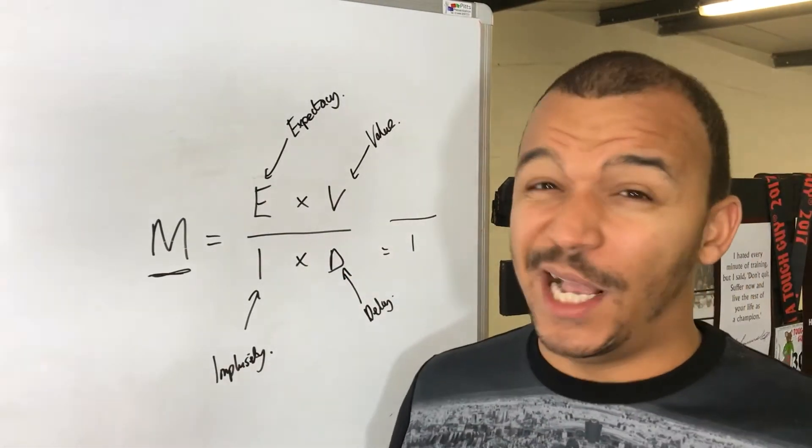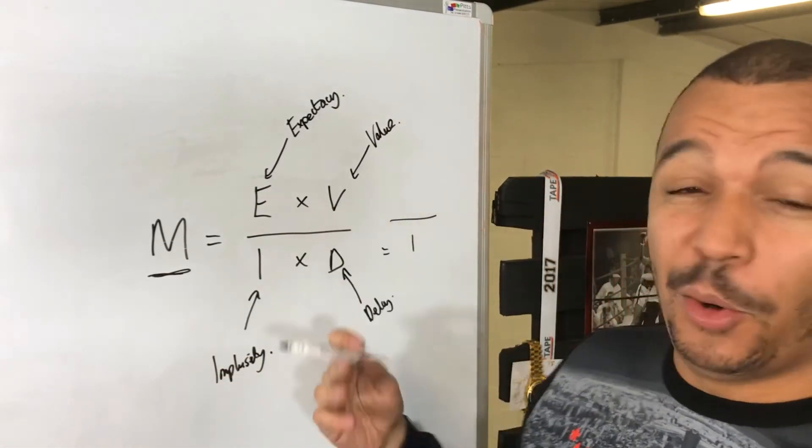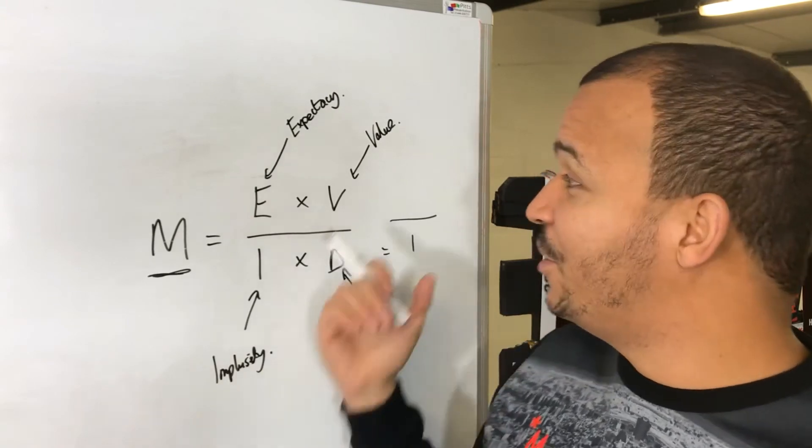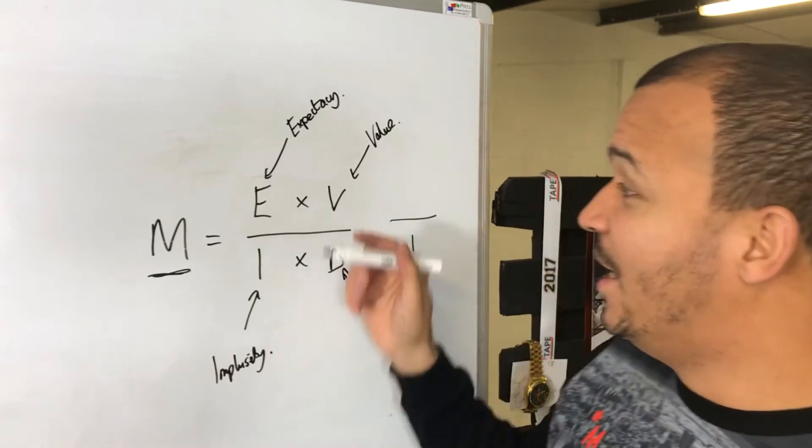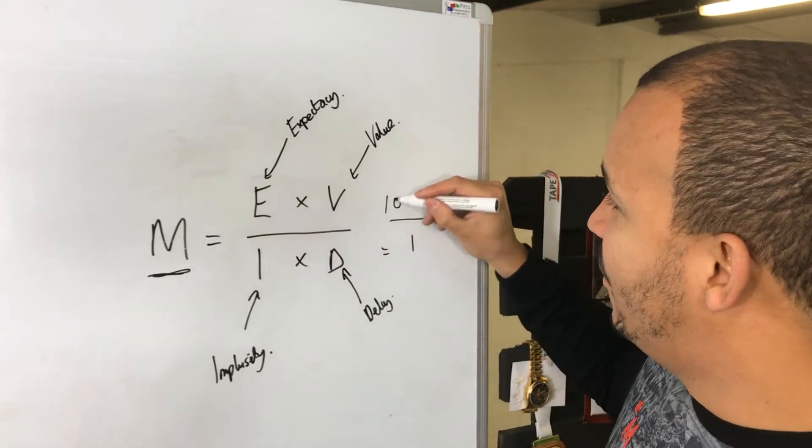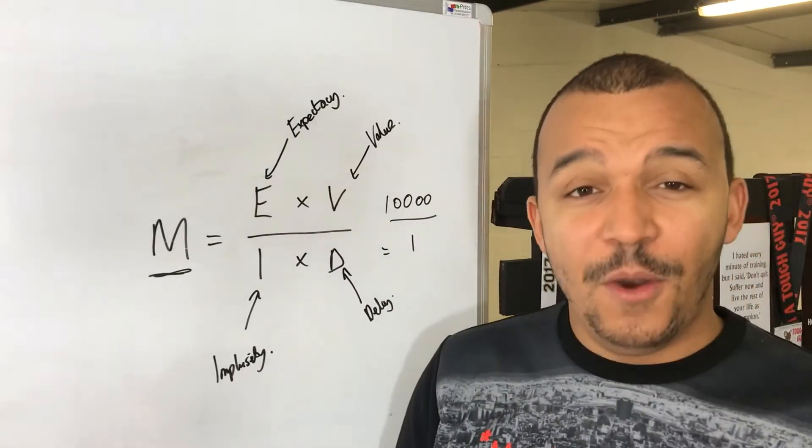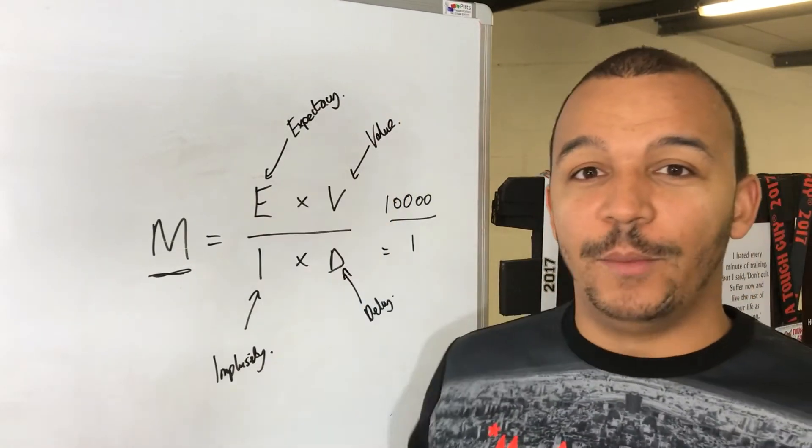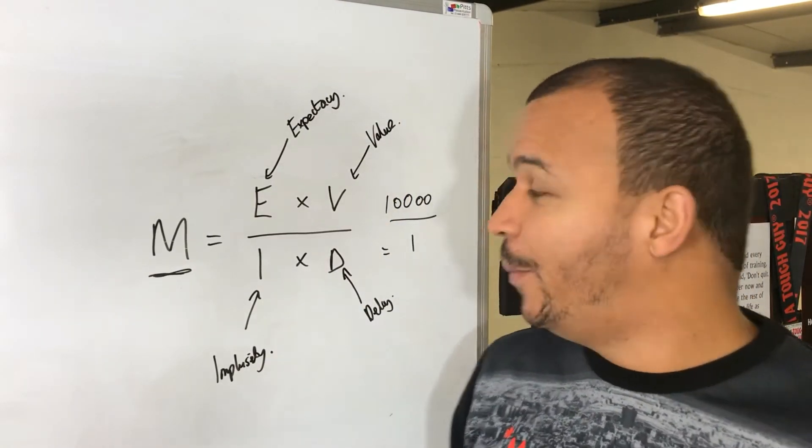And then let's say your expectancy was I am going to make this happen, maybe 100, I know it's going to happen. Your value is super pumped for it, if those were 200s, let's say for example, that is going to be a super big number. Motivation jacked right up, super high.